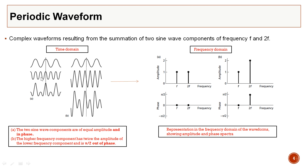On the right in figure B we have two waveforms at frequency f and 2f with different amplitudes, and they are out of phase by 90 degrees. When we add them together we get this resultant waveform. Frequency f has amplitude one and frequency 2f has double the amplitude, with the second waveform 90 degrees out of phase.